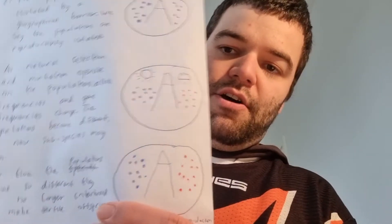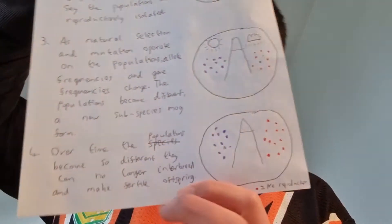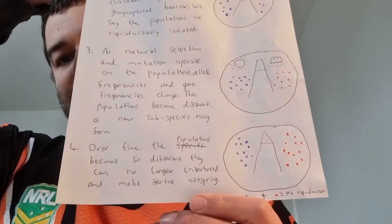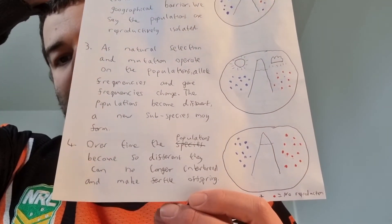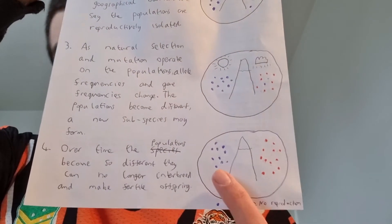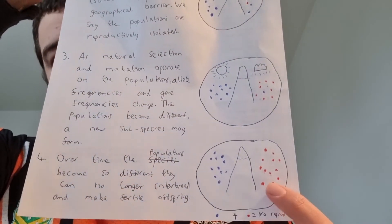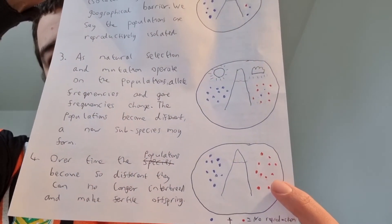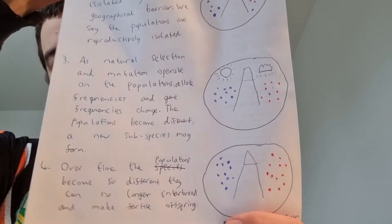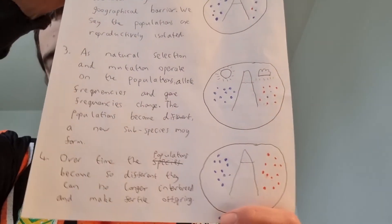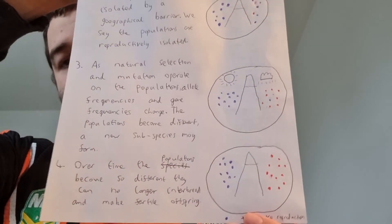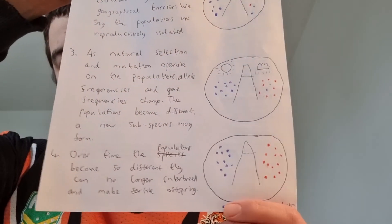But over a long, long period of time, eventually the differences may become so great that they can no longer interbreed and make fertile offspring at all. So even if we introduce this population and this population together, it wouldn't be possible for them to breed and make offspring that can breed themselves. At that point, a new species has arisen.